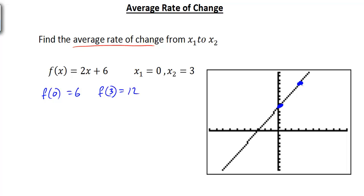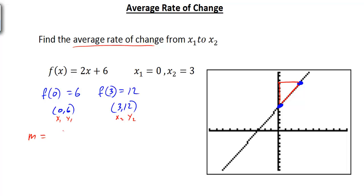What we're trying to find is the average rate of change between these two points, going from (0, 6) to (3, 12). Essentially what we're finding is the slope. Using our slope formula with x1, y1, x2, y2, we have 12 minus 6 over 3 minus 0, which gives us 6 over 3, equal to 2. So our average rate of change is 2.